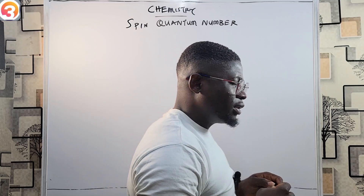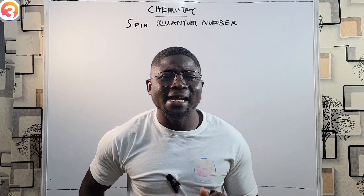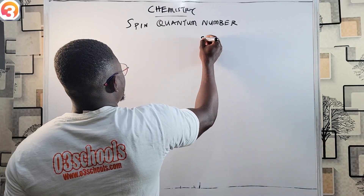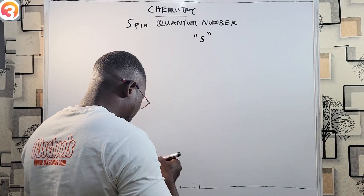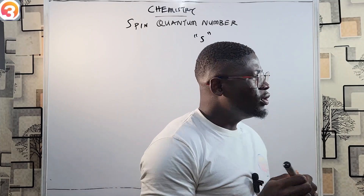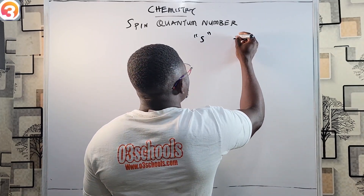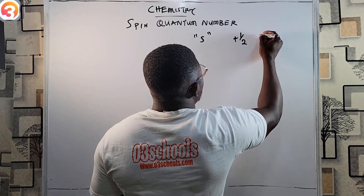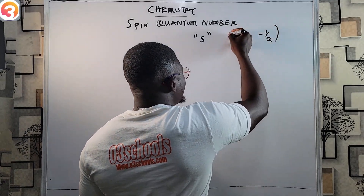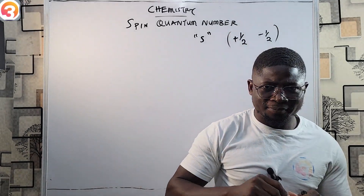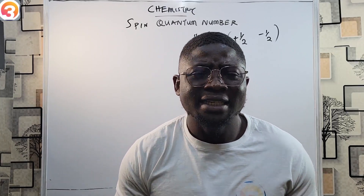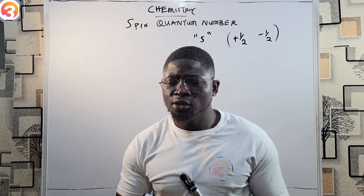The spin quantum number is represented by the letter s. The spin quantum number has only two values: its only values are plus one over two and minus one over two. These are the only two values for the spin quantum number.